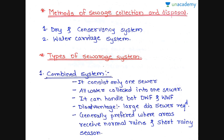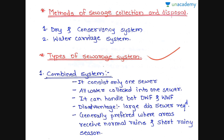The methods of sewage collection and disposal: the first method is the dry and conservancy system, which is an old system not used nowadays. The current system used is known as the water carrying system. These are the methods, and now we look at the types of sewerage systems.